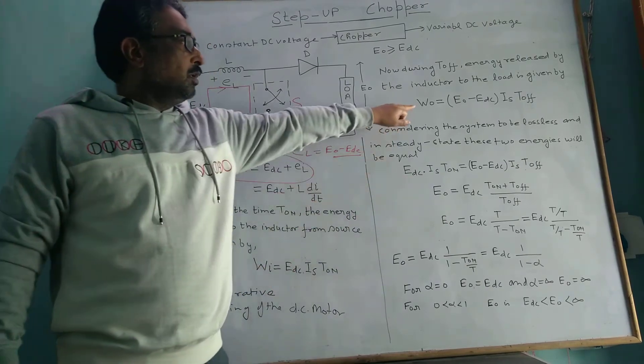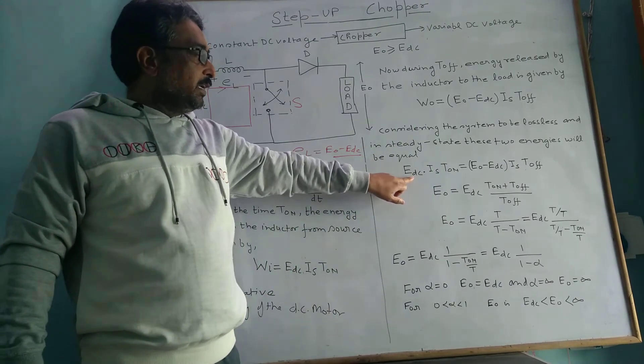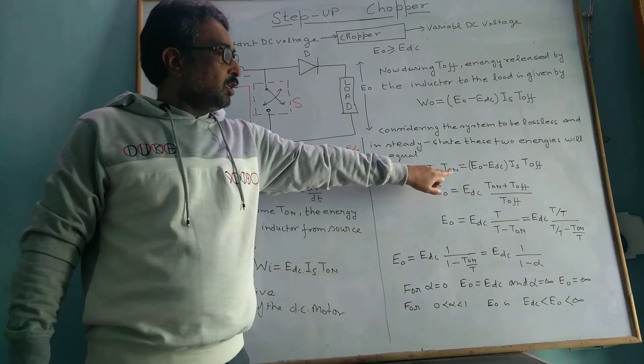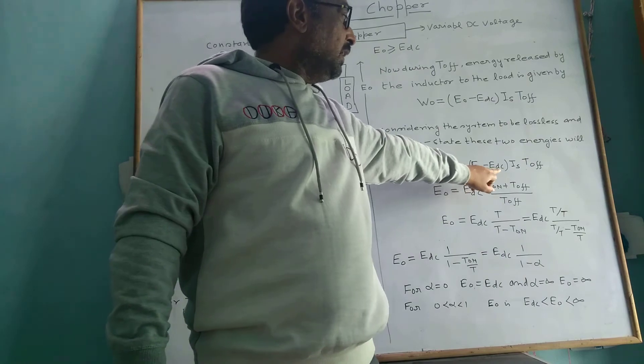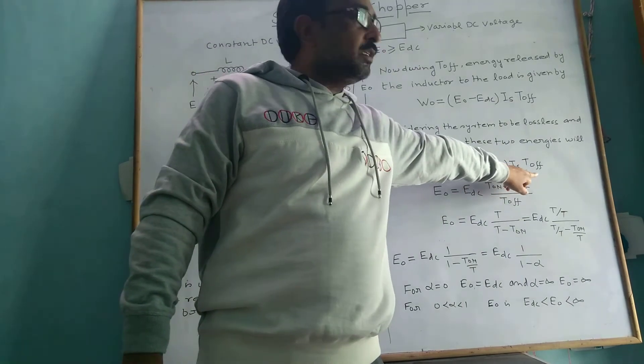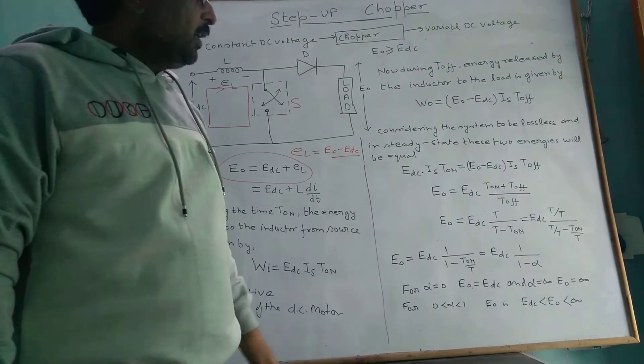E_DC multiplied by I_S into T_on equals E₀ minus E_DC multiplied by I_S into T_off.